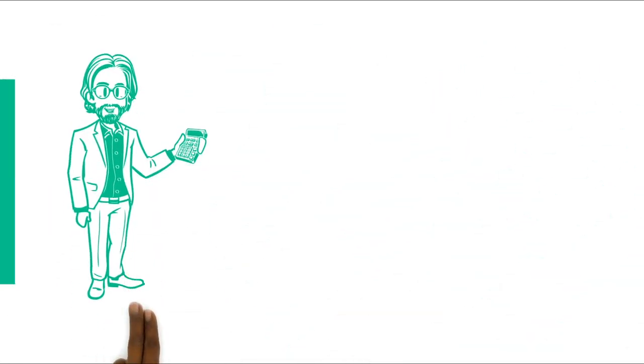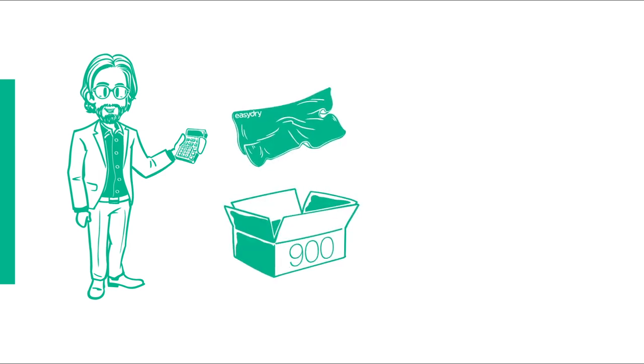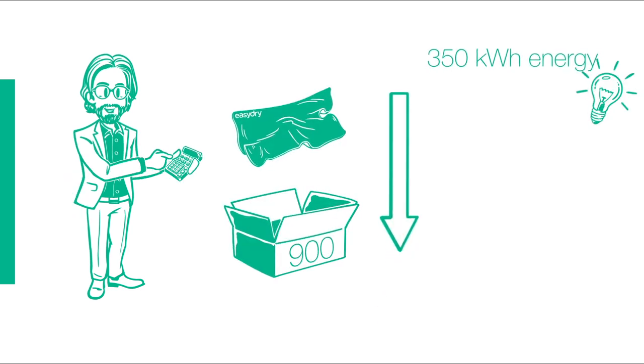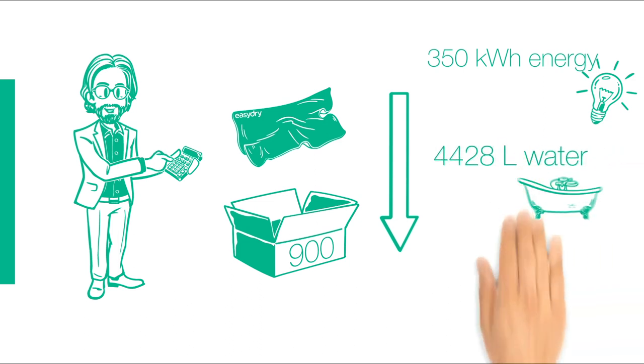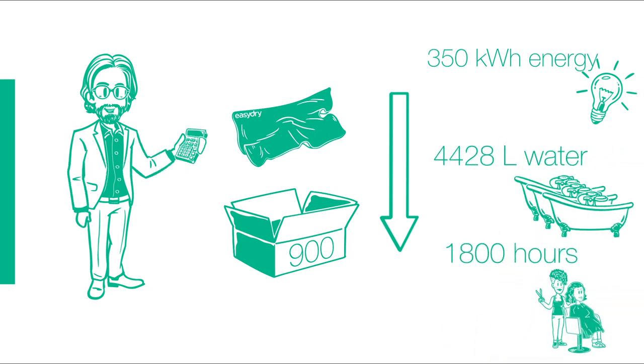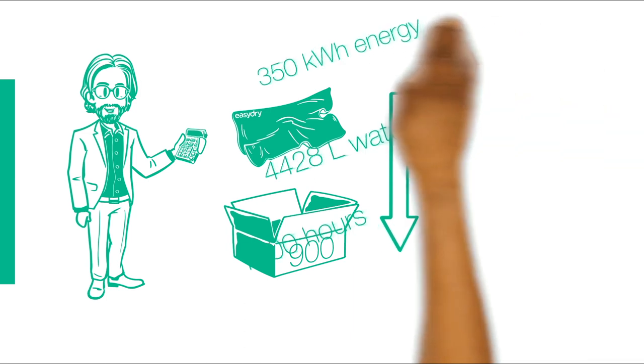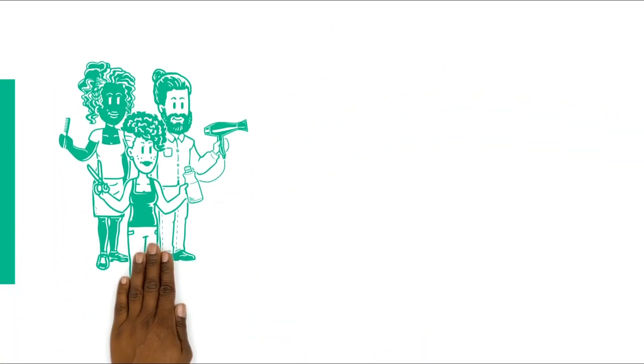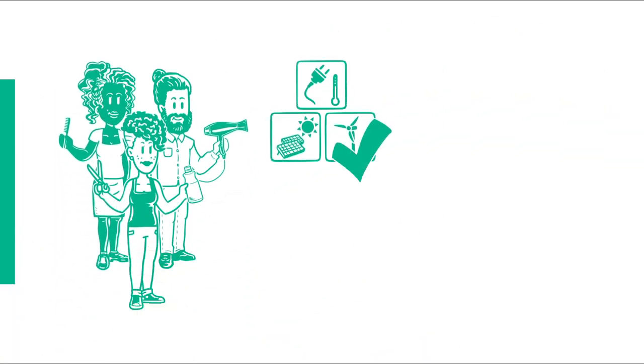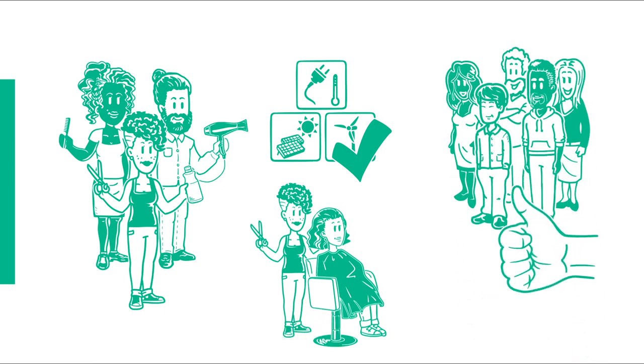Here is our calculation compared to cotton towels. One box of 900 easy dry towels save 350 kilowatt hours of energy, 4,400 liters of water and 1,800 working hours. The salon improves its environmental balance. And stylists need more time for what is truly important, their clients.